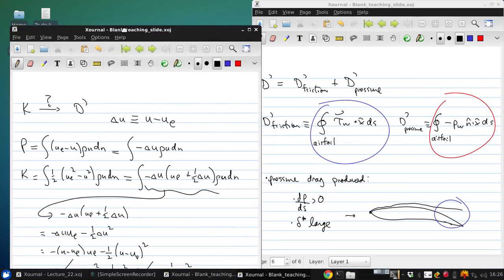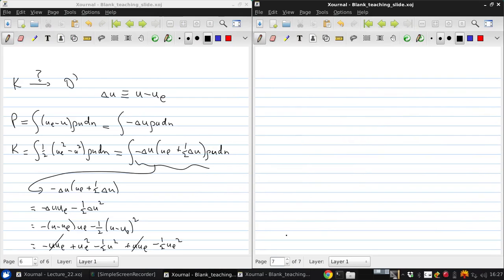Now, if we make the assumption that delta U is much smaller than UE, then we can approximate K as the integral of negative delta U times UE, rho U dn, because we are able to drop this term.